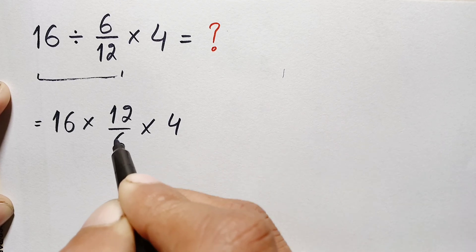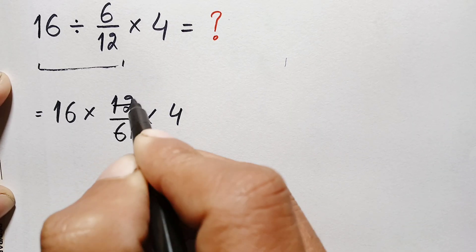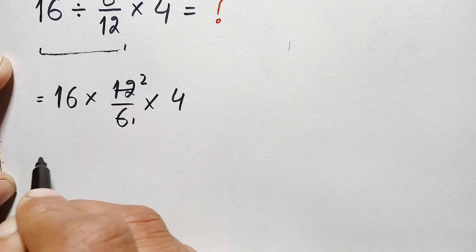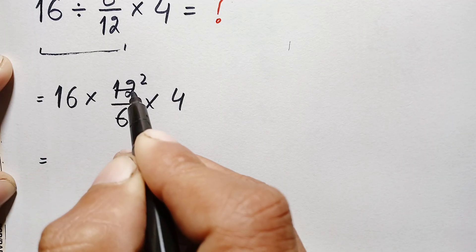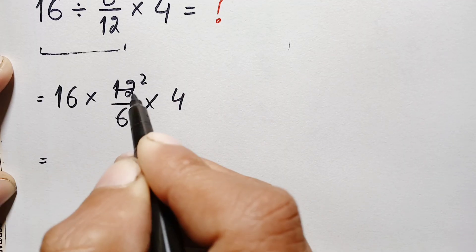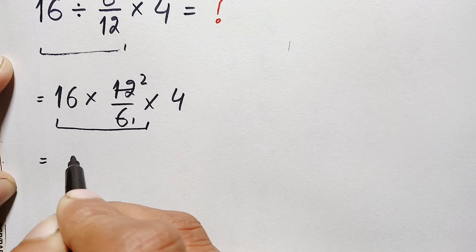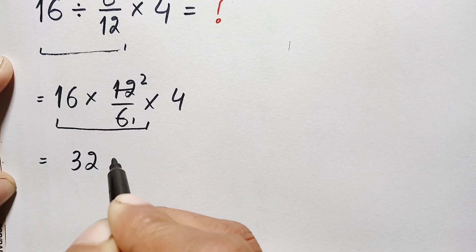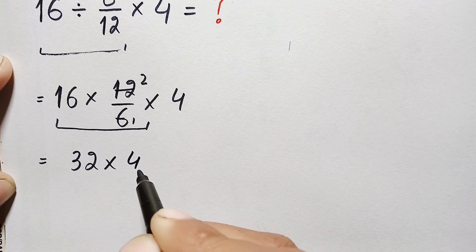Let's simplify these two numbers. 6 times 1 is 6, 6 times 2 is 12. So this will become 16 times 2 times 4. 16 times 2 is simply 32 times 4.